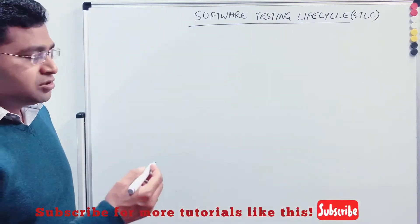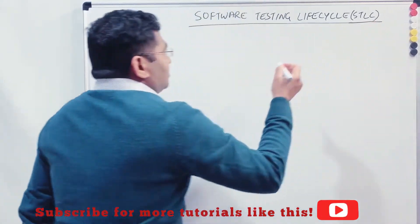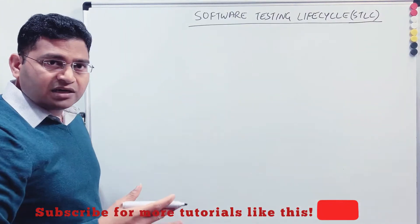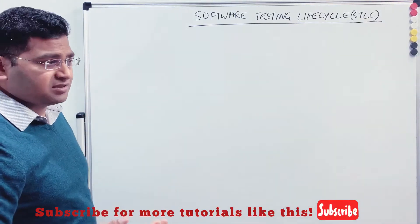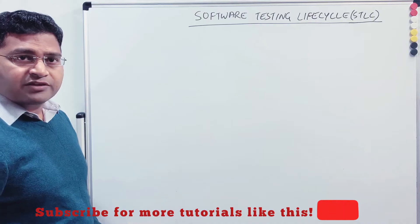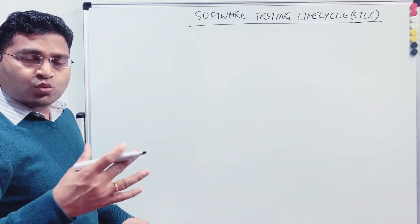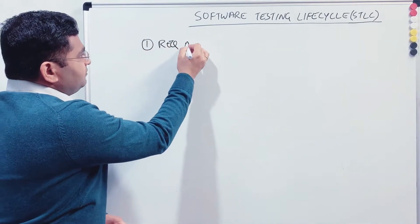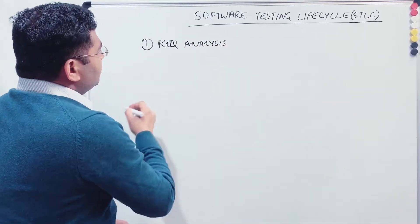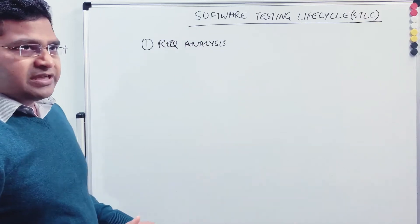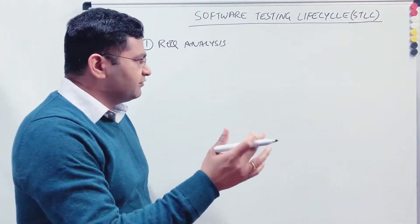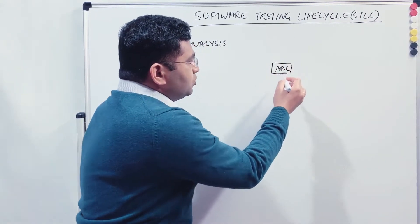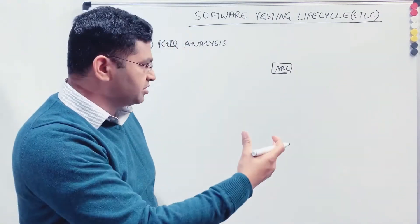So let's understand what exactly Software Testing Life Cycle is. It is a set of processes or phases. The first phase is Requirements Analysis. In any software development, the first thing you get is the requirements. So the first phase in STLC is Requirements Analysis. Say for example there is an organization named ABC which takes the project to develop software for customers.